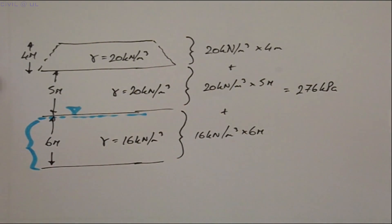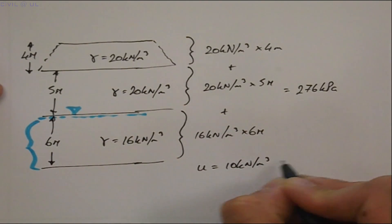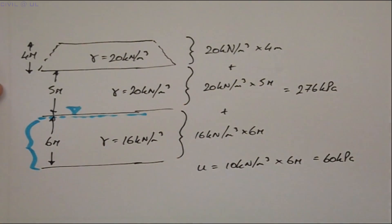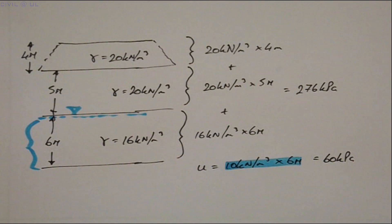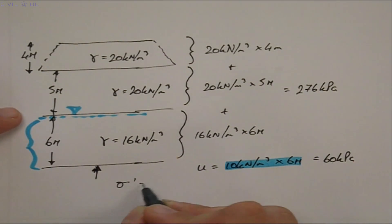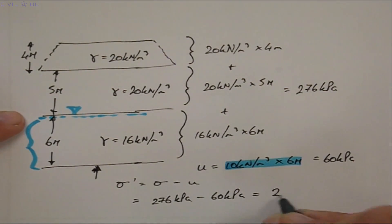And our pore water pressure remains as 6 multiplied by 10 or 60 kPa. Subtracting these gives us an effective stress here of 216 kPa.